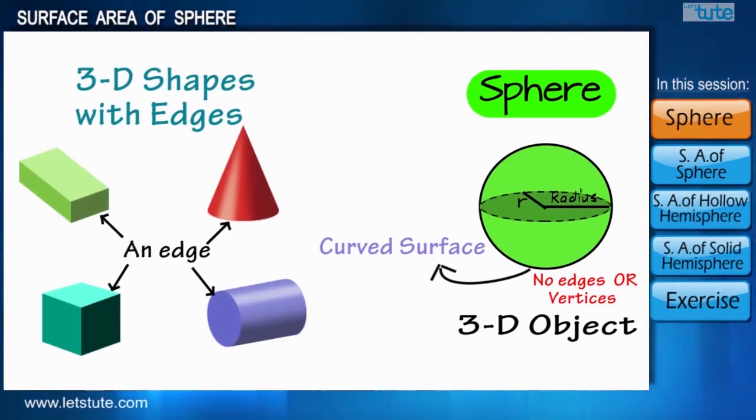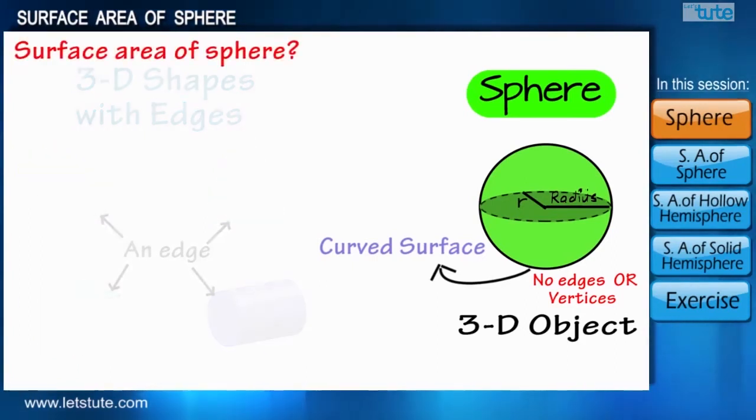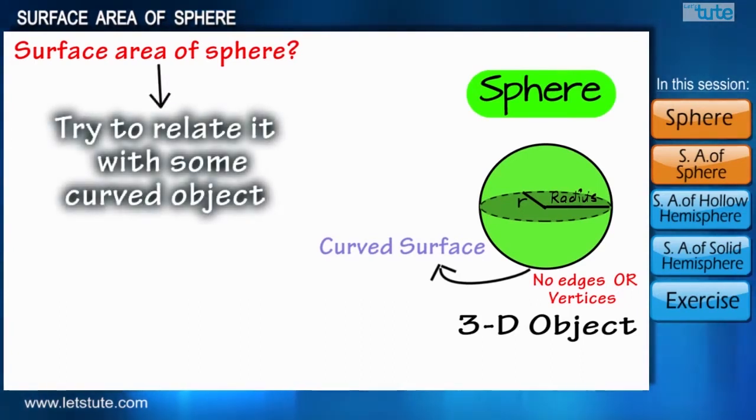Like the other objects which we have already learned in our previous sessions, how can we calculate the surface area of a sphere? Since it is round in shape with no edges, therefore it is a bit difficult to find its surface area, but we can make it easier to understand if you relate it with curved or round shaped objects.